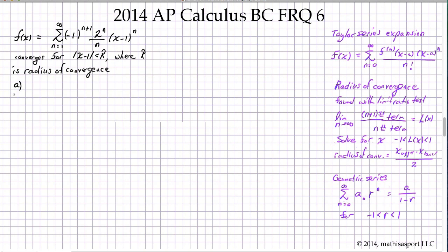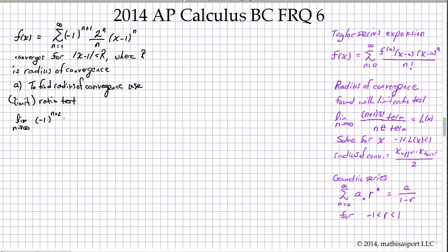First up is the need to find the radius of convergence. To find the radius of convergence, we use the limit ratio test — typically just called the ratio test. We take the limit as n goes to infinity of two successive terms written in terms of n. So let's take the term that would follow the general term: that's going to be negative 1 to the n plus 2, times 2 to the n plus 1, over n plus 1, times x minus 1 to the n plus 1.